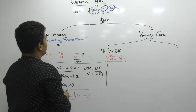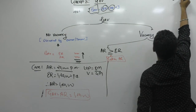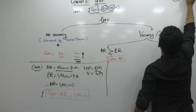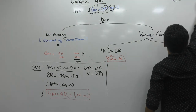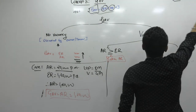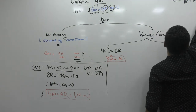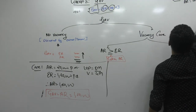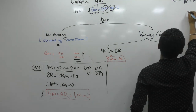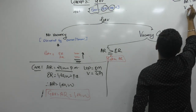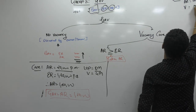This is Case 1. Now please understand Case 2. Same case: expected rent is 1 lakh 20,000 per annum. Actual rent is 20,000 per month. Now, vacancy period.